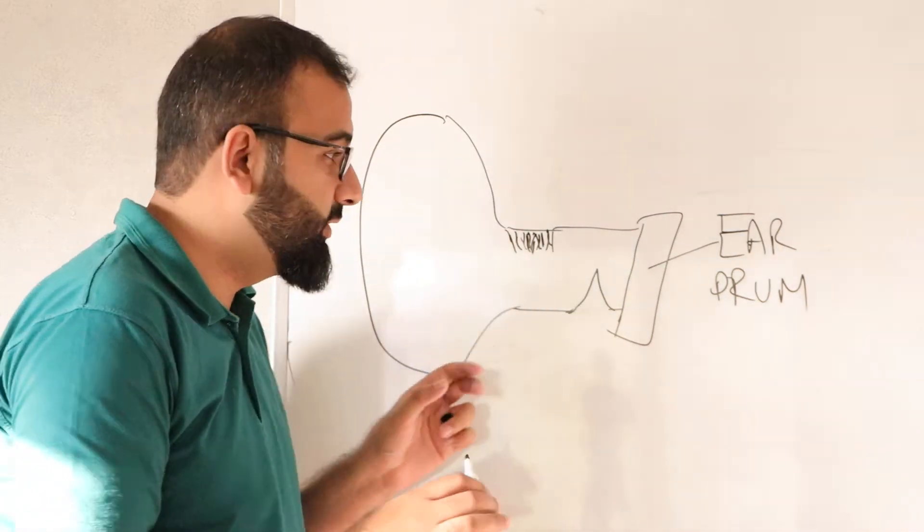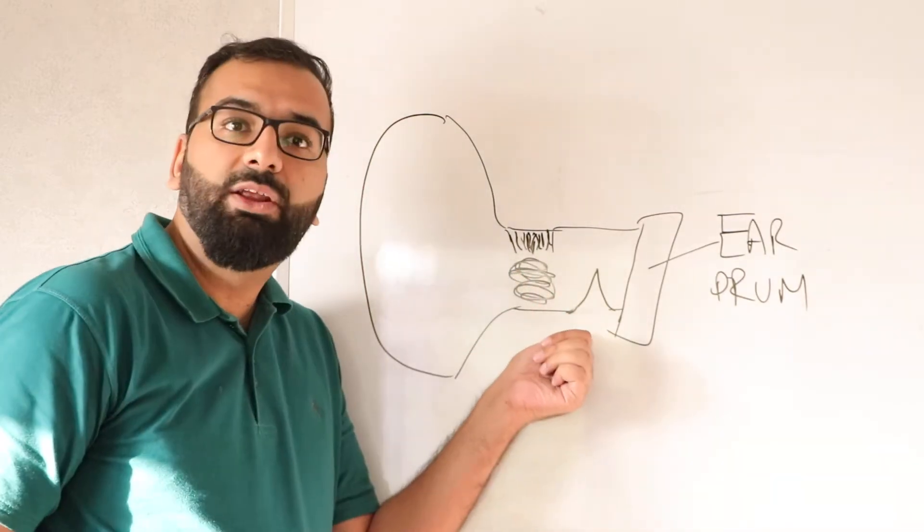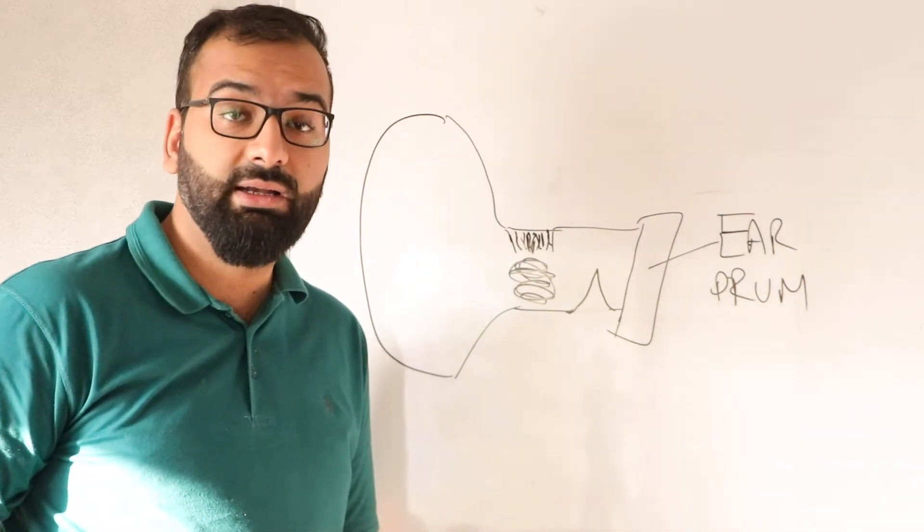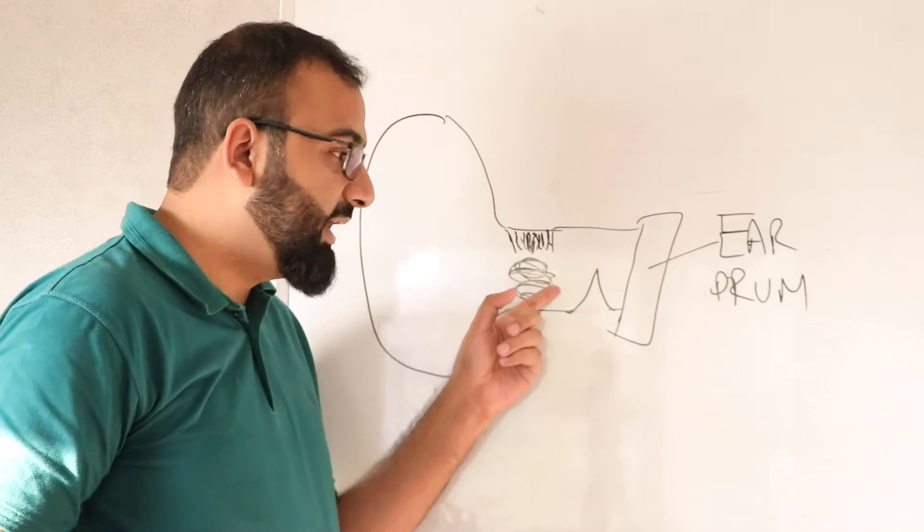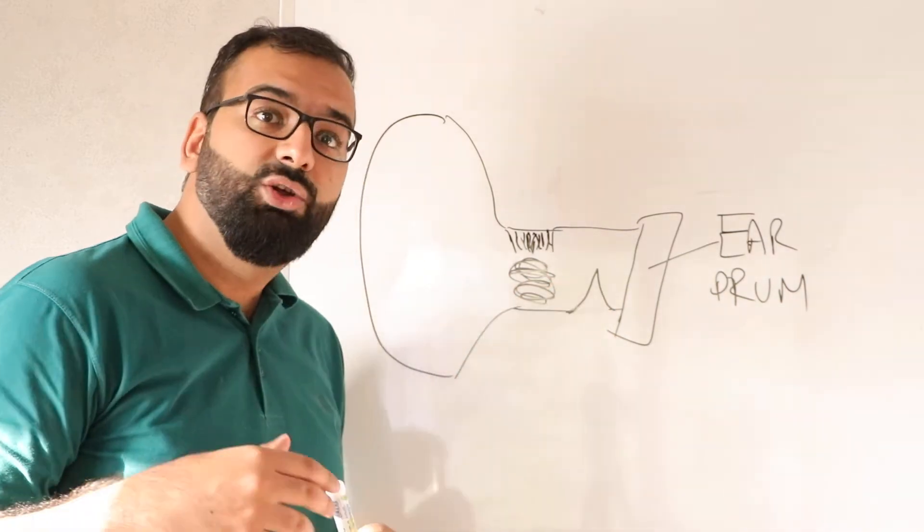So the wax would be here. This narrowing, which is also called the isthmus in medical language, prevents the wax from going towards your eardrum. Due to the natural mechanism of the body, the wax is cleaned on its own.